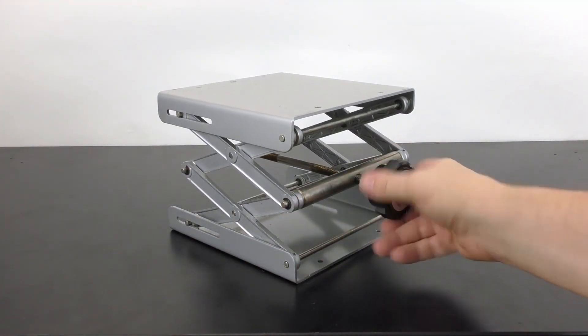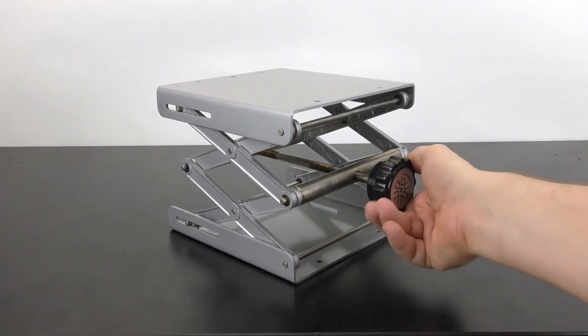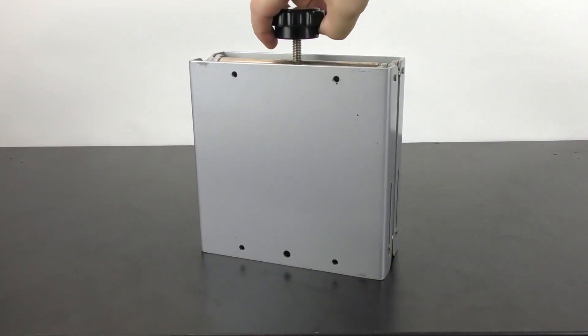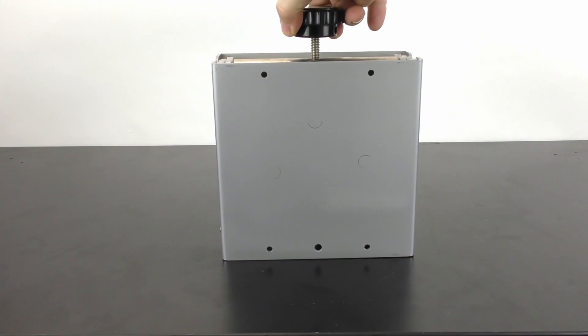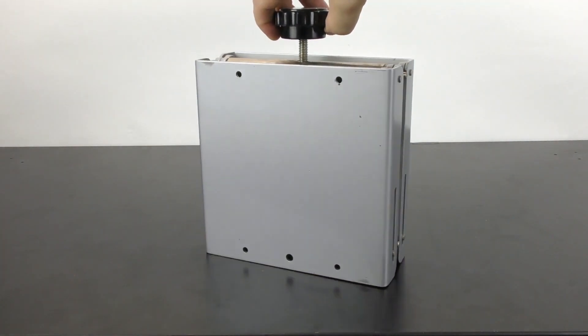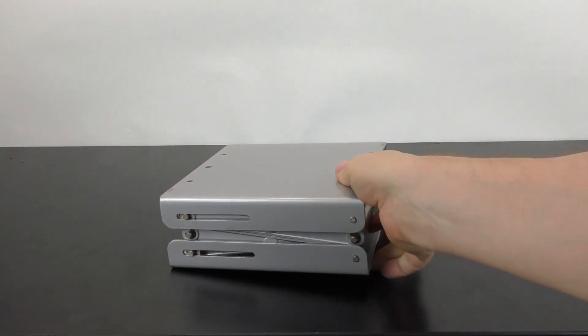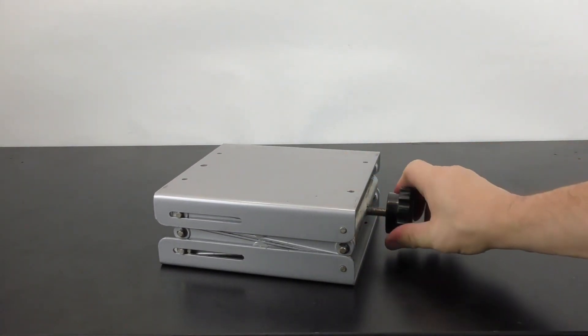The scissor jack design allows you to adjust the height simply and easily with a simple turn of the knob. There are holes on the top and the bottom if you wish to mount other support stand hardware, but it does not matter which orientation you use the lab jack in.